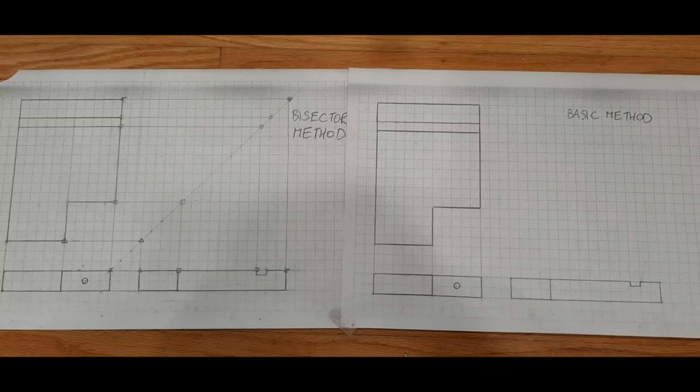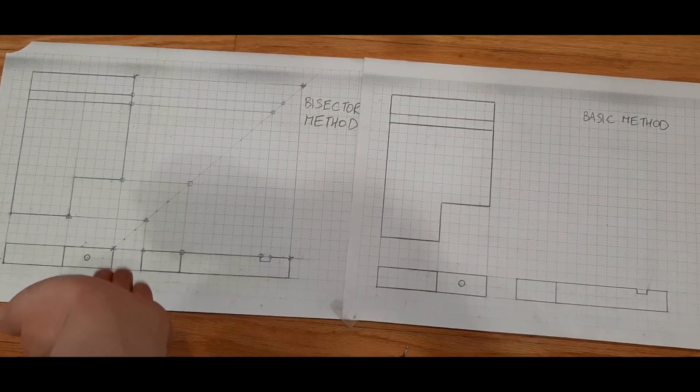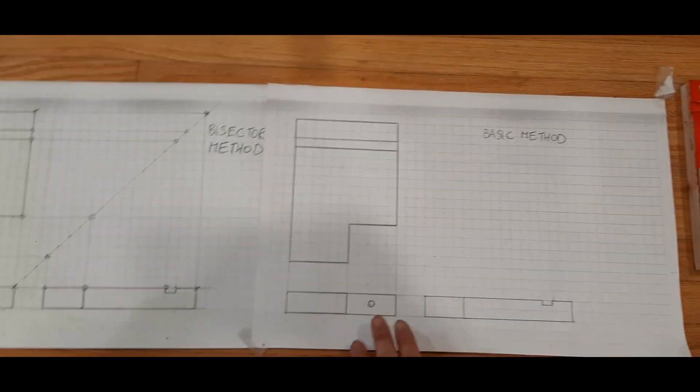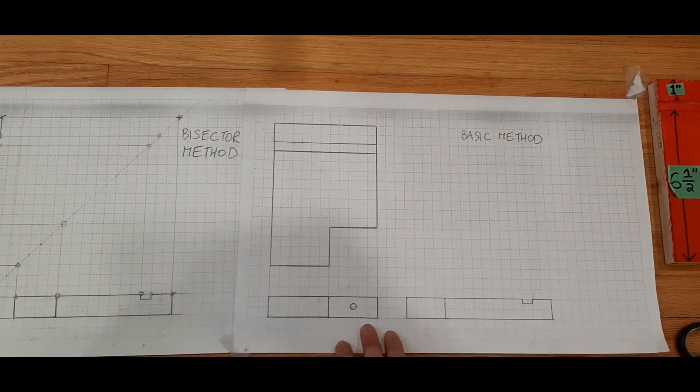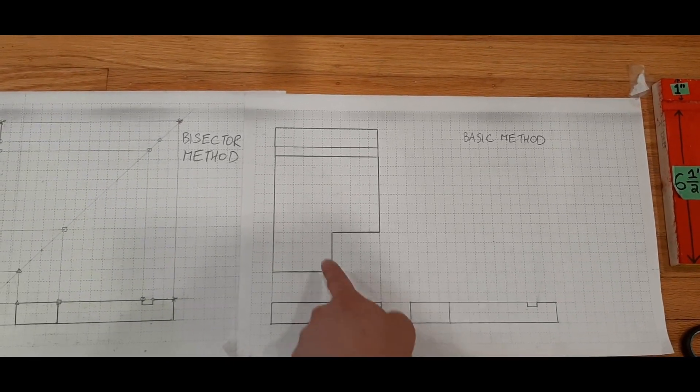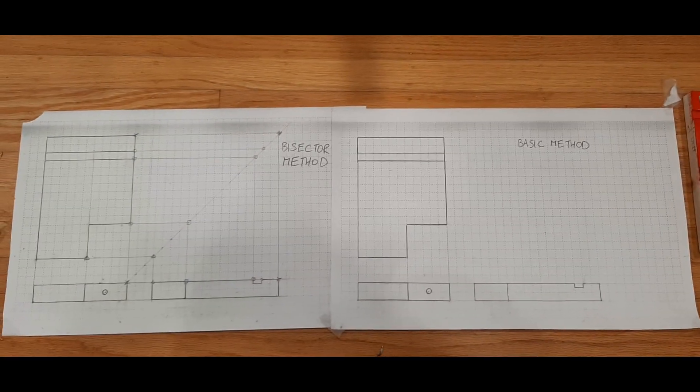In this video in our playlist, I'm going to teach you how to add the hidden lines to your drawings. Whether you chose to use the bisector method on the left, or you ignored and skipped the bisector section and just went with the basic method, making sure that there's the same number of squares between each of the views, your result is actually identical.